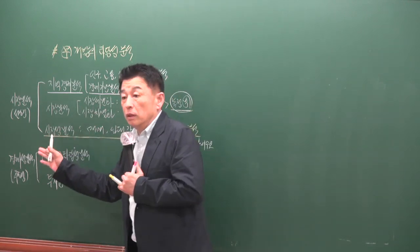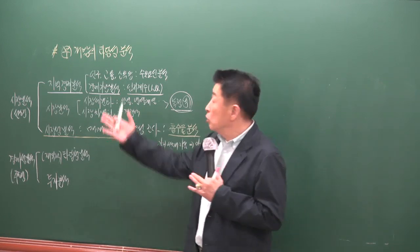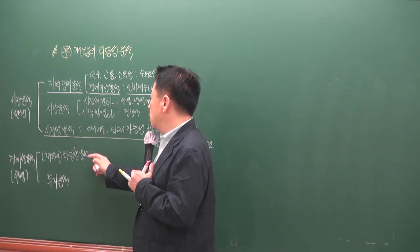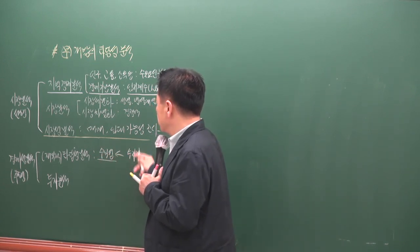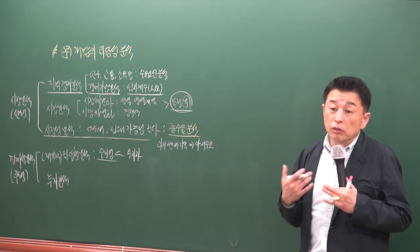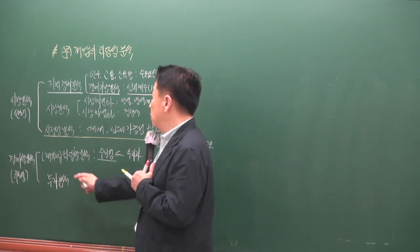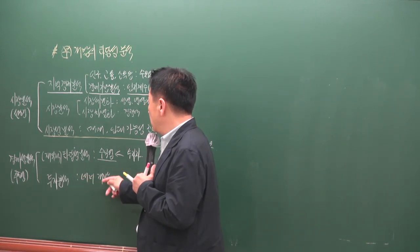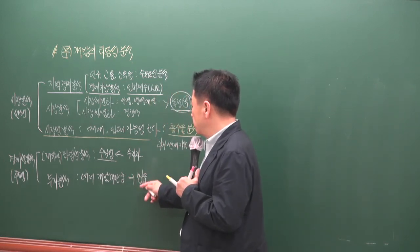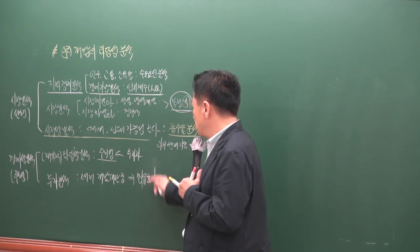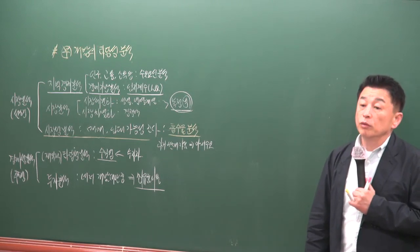시장성 조사 이후에는 재무적 타당성 분석을 합니다. 전 단계에서 조사된 자료를 토대로 개발 사업의 수익성, 즉 투자자의 자금을 끌어들일 수 있을 만큼 수익성이 나오는지를 조사하는 것입니다. 이후 투자 분석에서는 여러 개발 사업 대안 중 최유효이용이 될 수 있는 개발 사업을 선택합니다. 시장성이 있어도 경제성이 없으면 개발 사업은 추진하지 않습니다.